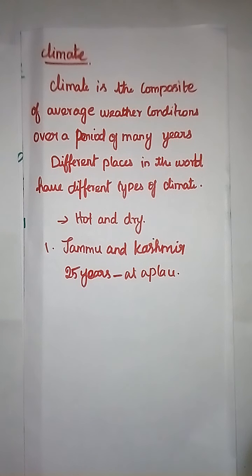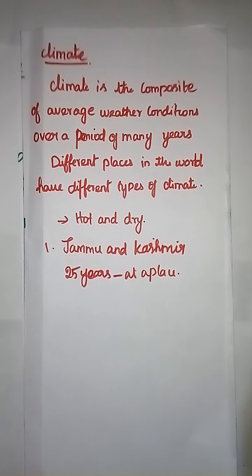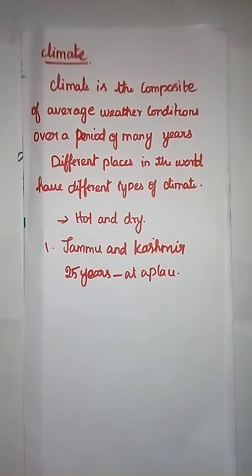If you find that the temperature at a place is high most of the time, then we say the climate of that place is very hot. If there is also heavy rainfall on most of the days in the same place — for example, a hill station — there is rainfall at that place most of the time.